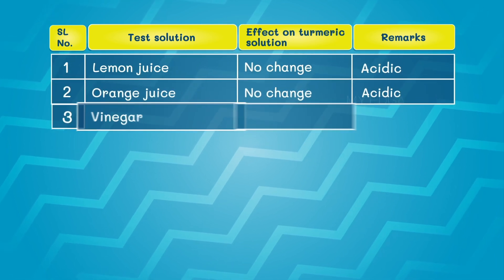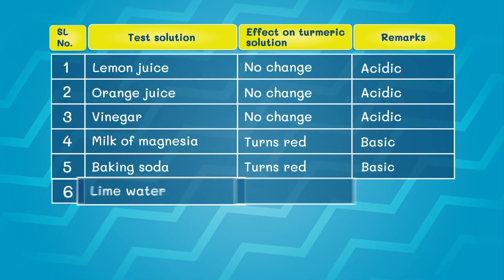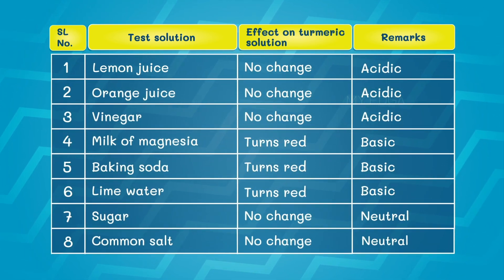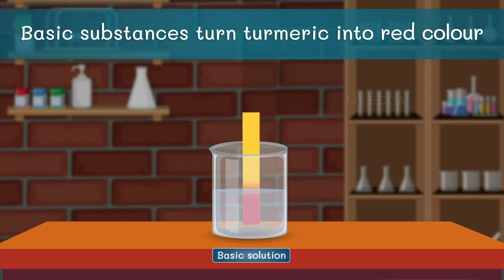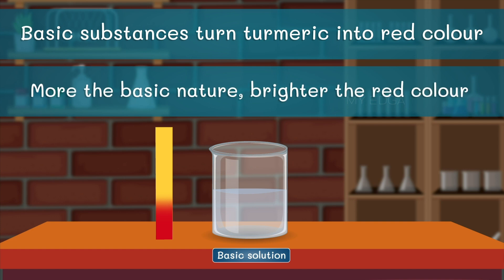Now let us list out the effect of substances on turmeric from our observations. Therefore we can say that basic substances turn turmeric into red color. The more the basic nature, the brighter the red color.